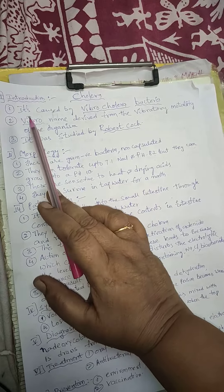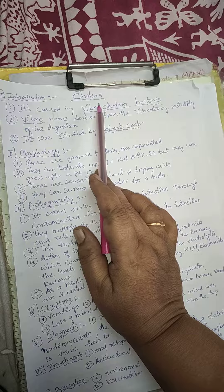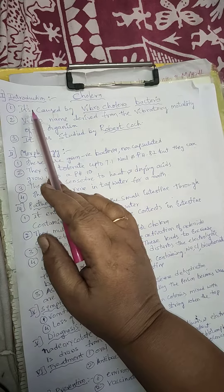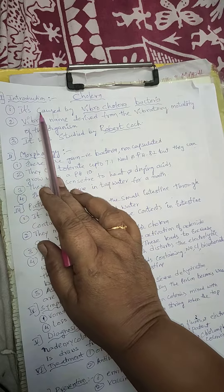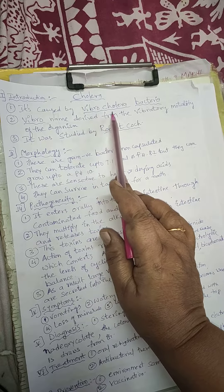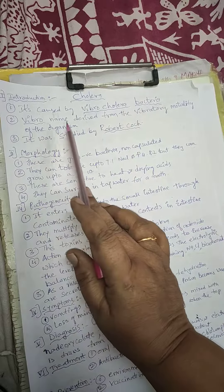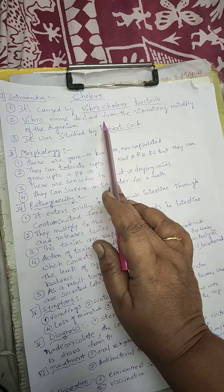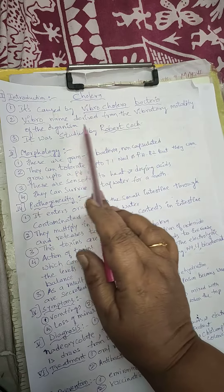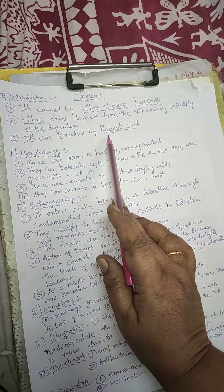Good morning children. Today our topic is cholera. In this topic there are seven side headings. Number one side heading is introduction. Cholera is caused by the bacteria known as Vibrio cholerae. The Vibrio name is derived from the motile character of the organism, and cholera was studied by the scientist Robert Koch.